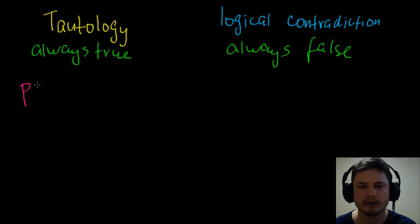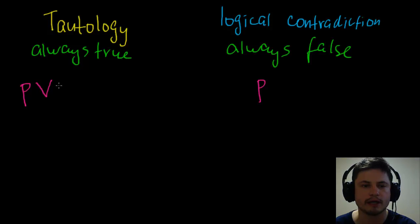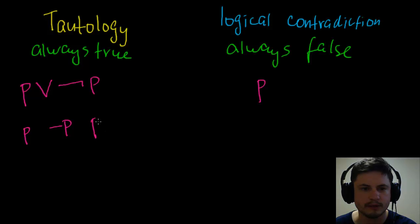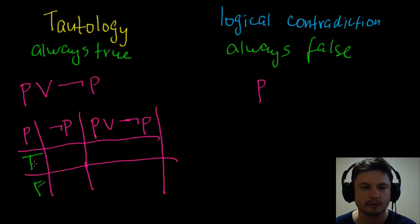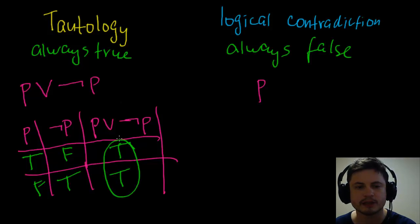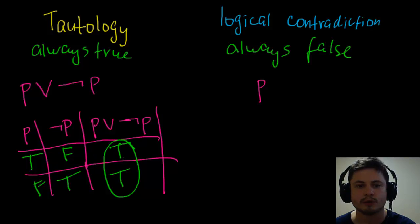A good example of a tautology is p or not p. If we build the table with columns p, not p, and p ∨ ¬p: when p is true, not p is false, so p or not p is true; when p is false, not p is true, so p or not p is still true. No matter what, this entire column is always true — that's what tautology means.